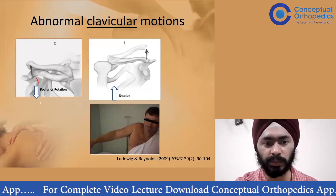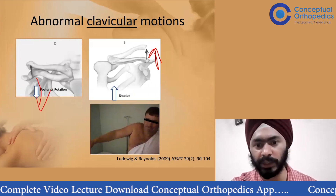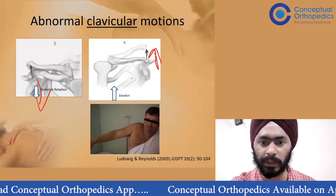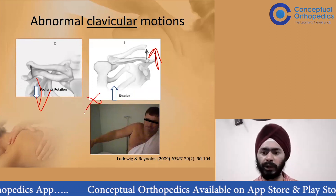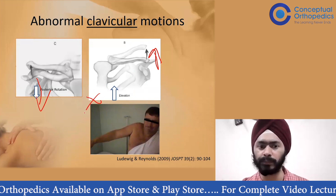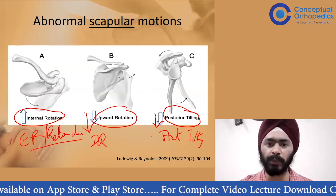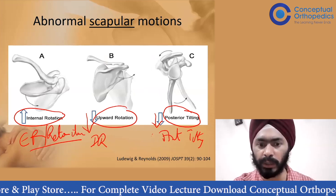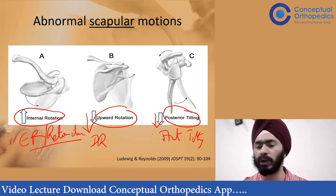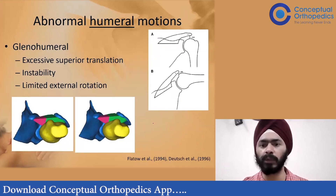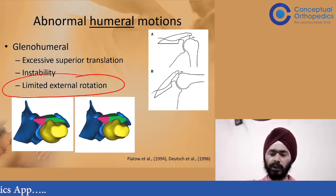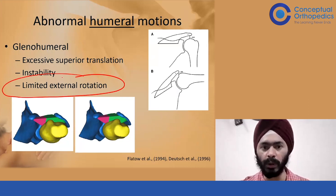Abnormal clavicle motions include decreased posterior rotation and increased elevation. Focusing on the scapula: abnormal movements are decreased upward rotation or increased downward rotation, decreased posterior tilting or increased anterior tilting, and increased protraction or internal rotation. Abnormal humeral motion is basically limited external rotation — if you cannot externally rotate, you will not be able to get your arm fully overhead with normal biomechanics.